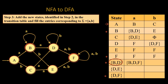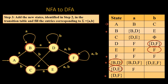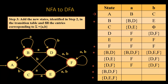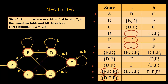{B,D} on A gives {B,D,F}, which is a new state. {B,D} on B gives {D,E,F}, another new state. Then {D,E} on A gives F (already exists) and {D,E} on B gives {D,F} (already exists). {D,F} on A gives F; {D,F} on B gives {D,F}. So we have two new states: {B,D,F} and {D,E,F}. We add them to the transition table. {B,D,F} on A gives {B,D,F} itself; {B,D,F} on B gives {D,E,F}. {D,E,F} on A gives F; {D,E,F} on B gives {D,F}. No more new states arise.